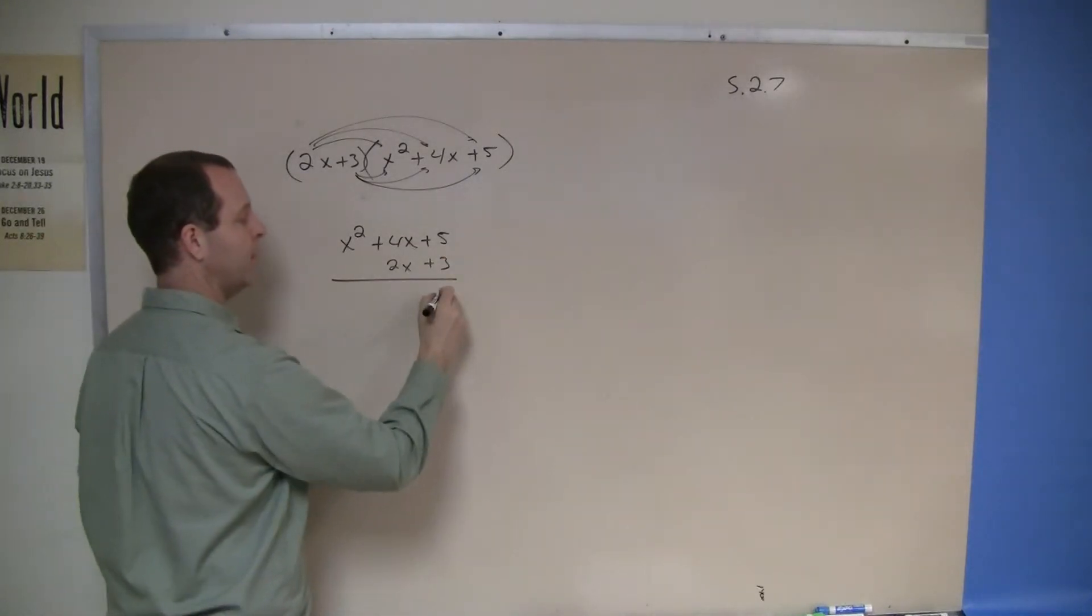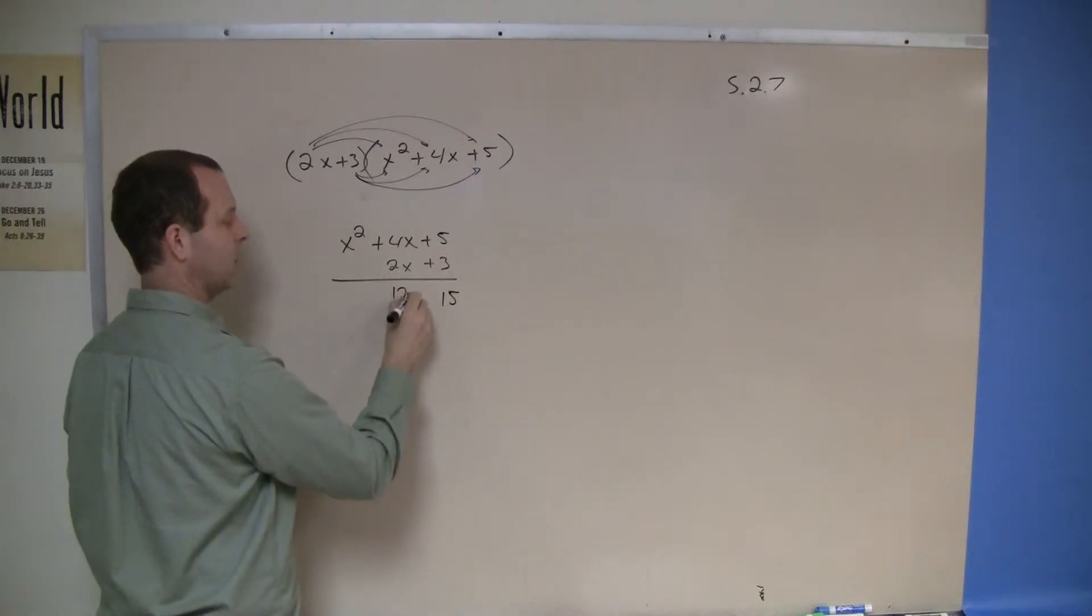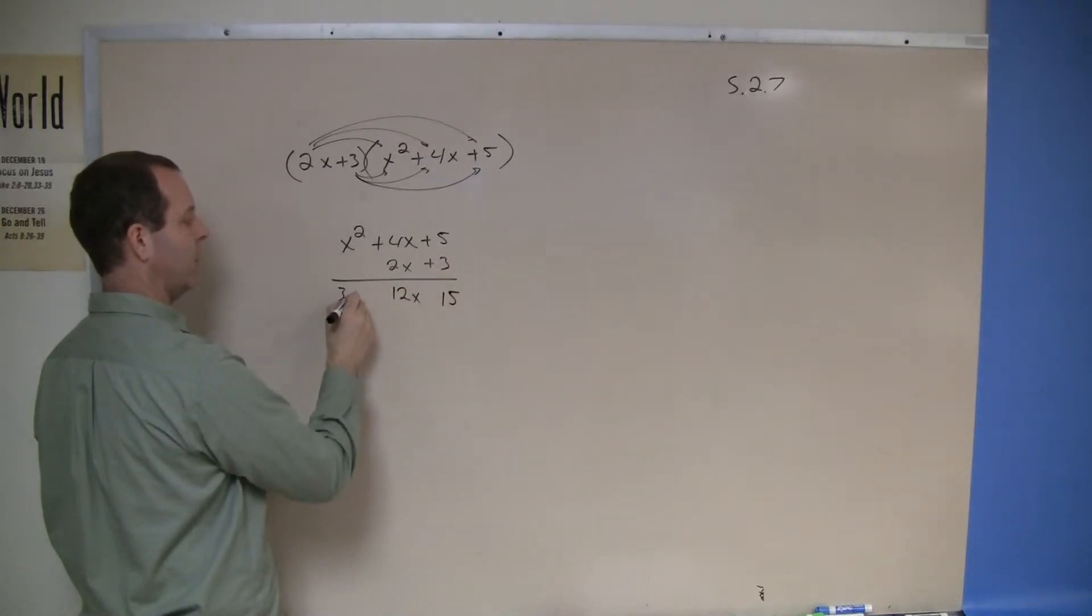This term times this one is 15. 3 times 4x, 12x. 3 times an x squared, 3x squared.